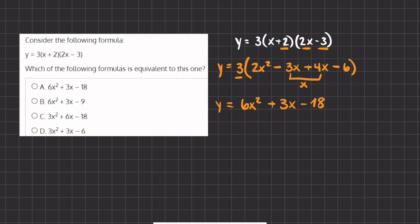So this is our simplified version. We foiled and then we distributed the 3. If we look at our answers, option A matches our answer perfectly. Therefore A will be the right answer.